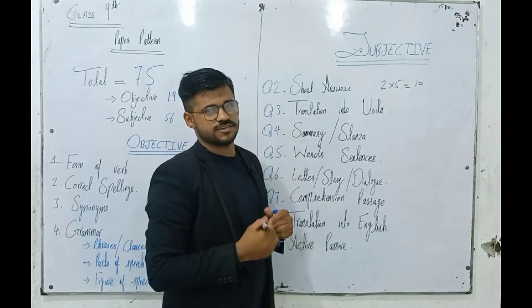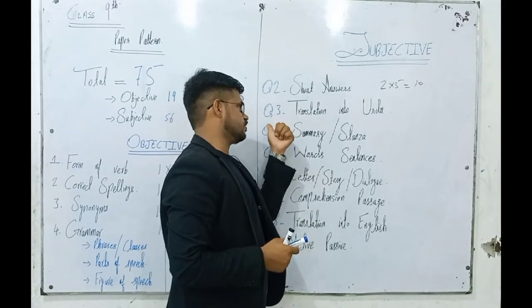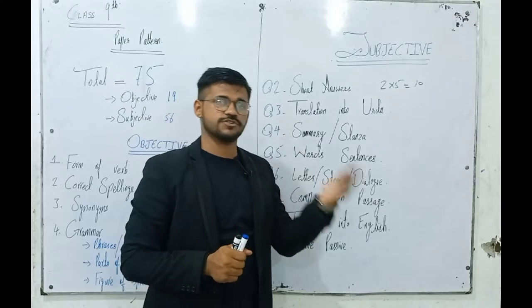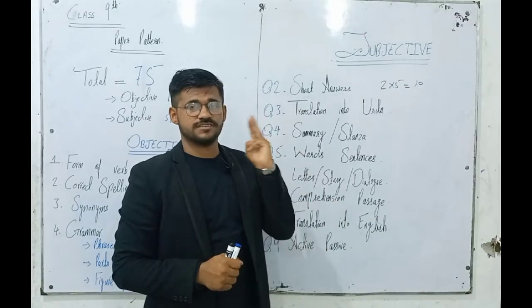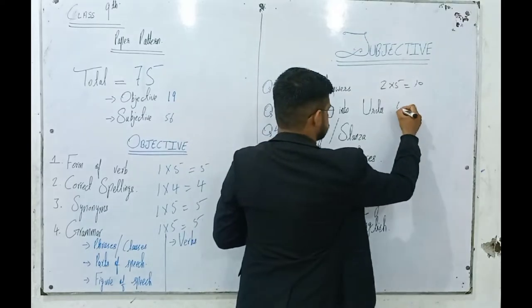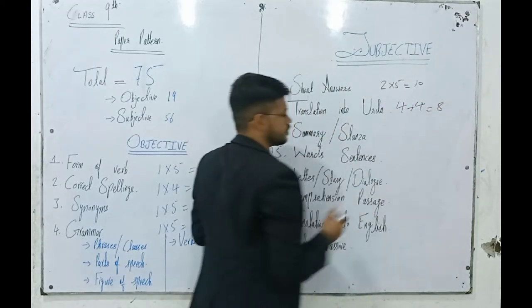Next, question number 3, translation into Urdu. This paragraph is called Books. We have 3 paragraphs, attempt any 1. This is 4 plus 4 equals 8 marks.